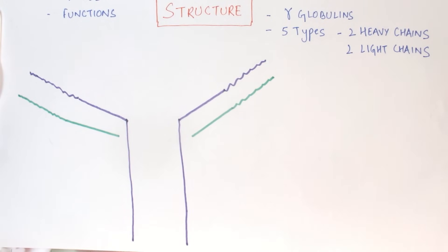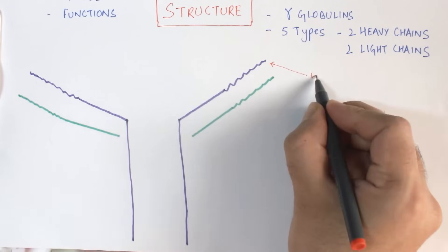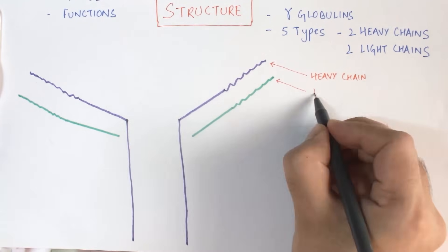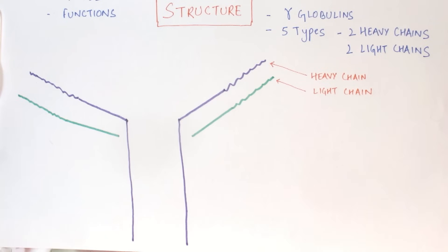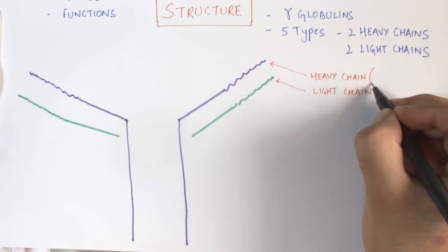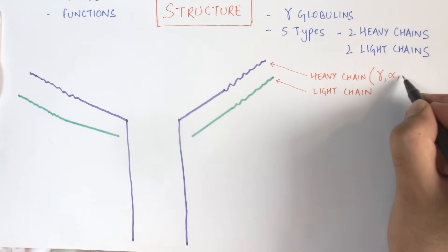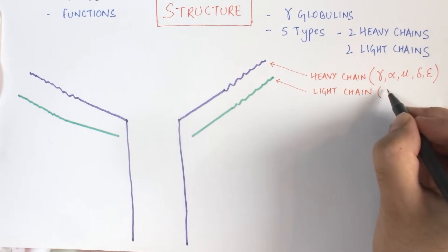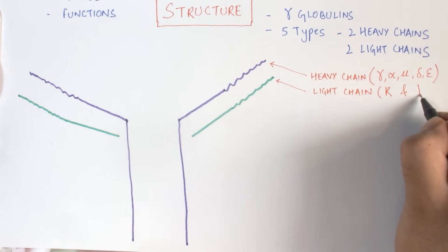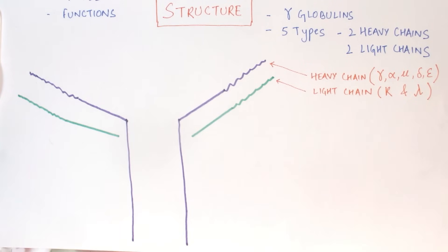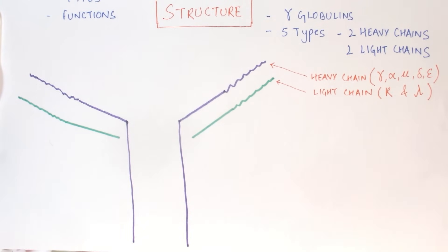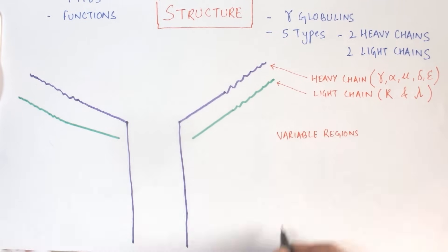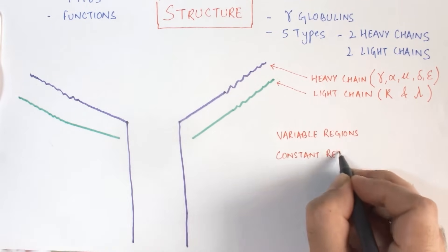As you can see, the chains in the violet color are the heavy chains, and the chains in the green color are the light chains. The heavy chains are of five types: gamma, alpha, mu, delta, and epsilon. The light chains are of two types: kappa and lambda.